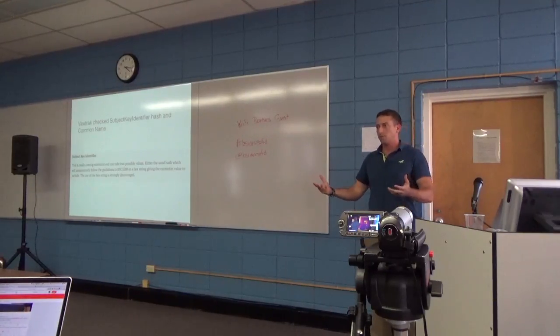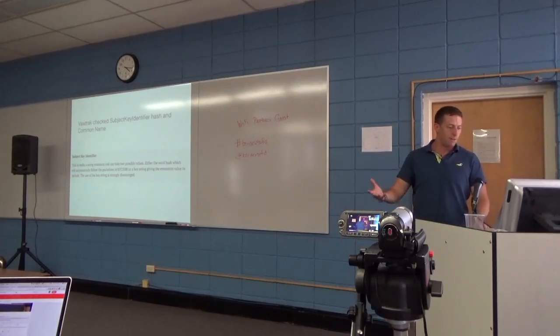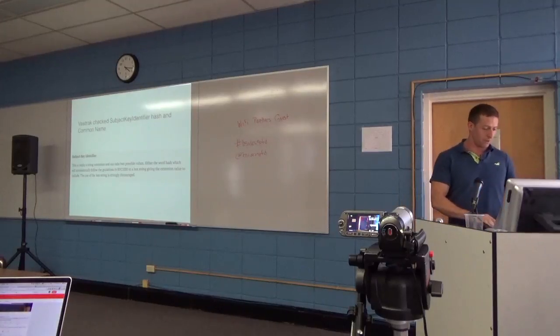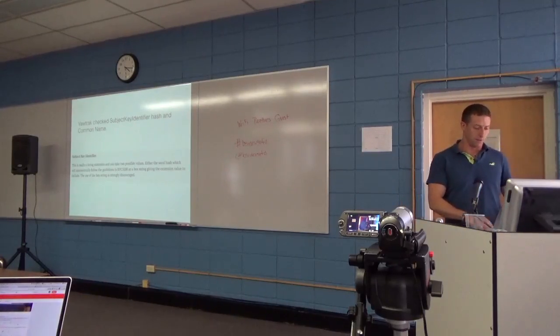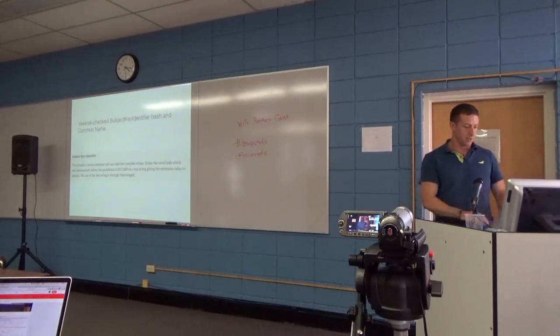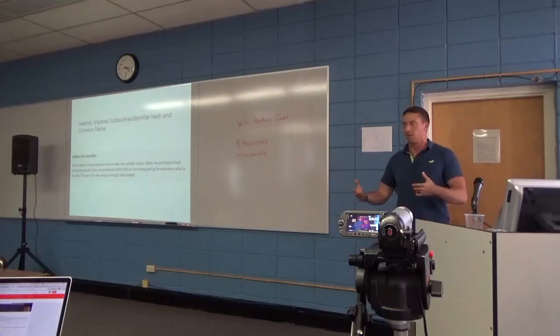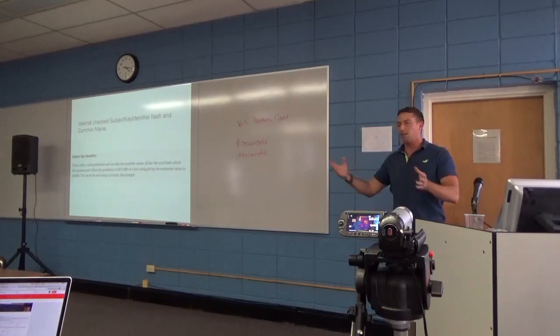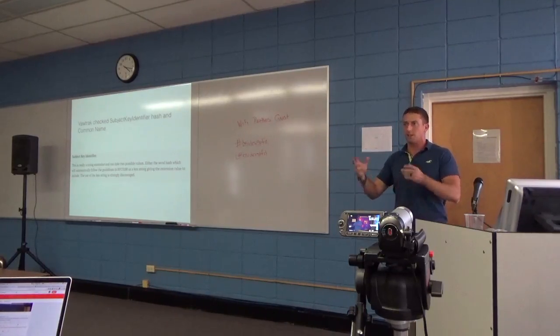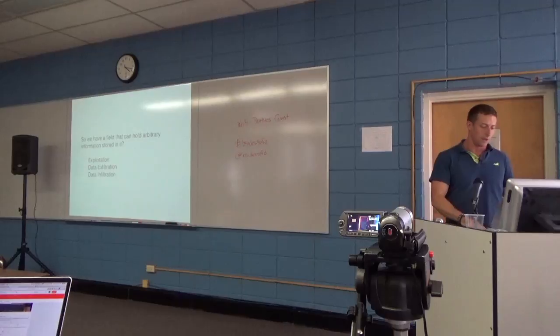But it got me interested in what this extension meant. It's a subject key identifier. So I went to the specifications and read what it said, which you can read here. If you have any exploitation experience reading stuff like this, you pick up on some buzzwords, right? Like this is a string extension that can take two possible values. The end sentence, the use of this hex string is strongly discouraged. They don't have any guidelines for how big or small it should be. You can put whatever you want in there. It's supposed to be a hash, but it doesn't have to be a hash length. There's all these things that they don't specify in their specifications and it leaves you open to this kind of exploitation mindset of how you can use it for something other than its intended purpose.